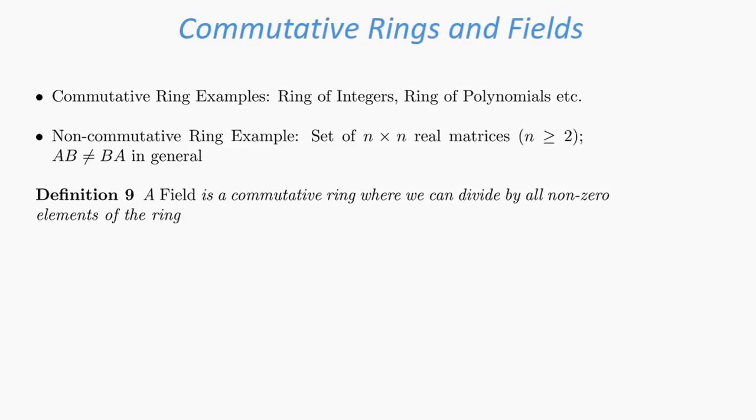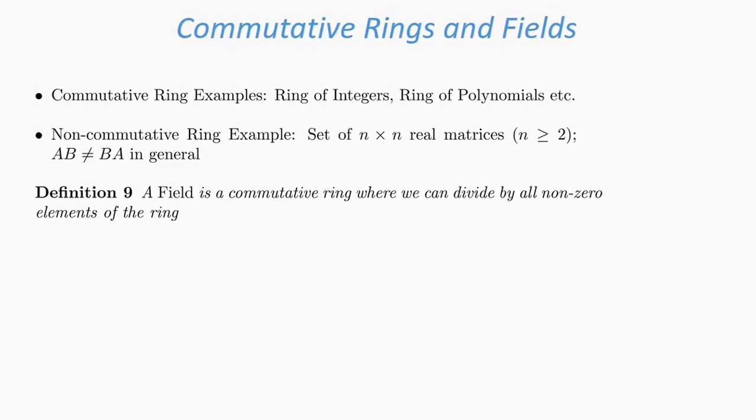We also define what a field is. A field is a commutative ring where we can divide by all non-zero elements of the ring. In other words, all non-zero elements of the ring have inverses.